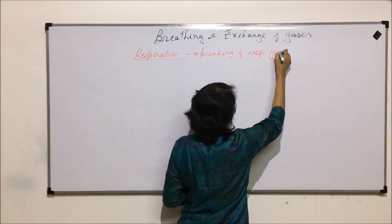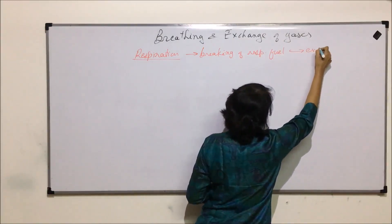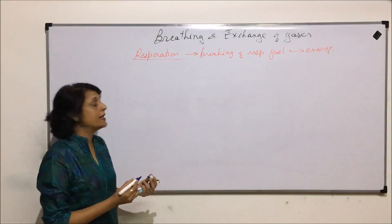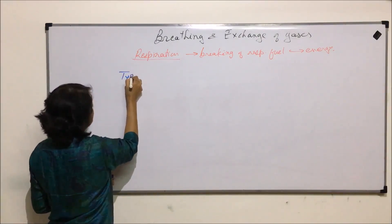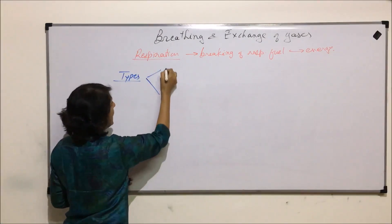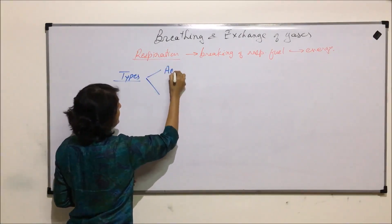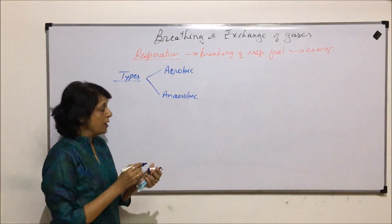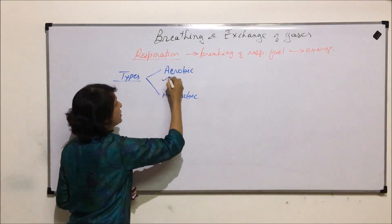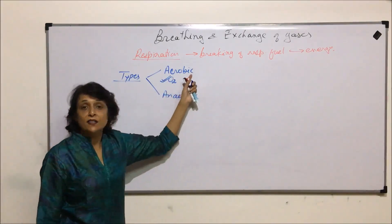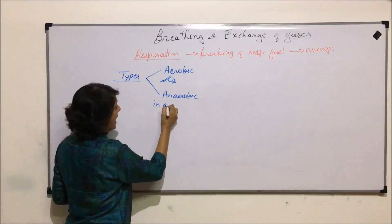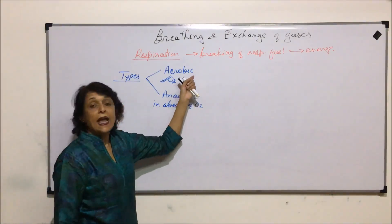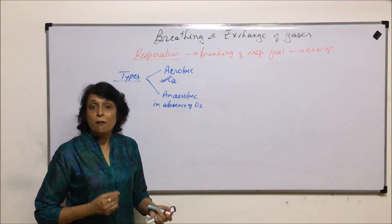Respiration is basically the breaking down of respiratory fuel to get energy. If this breakdown takes place in the presence of oxygen, we call it aerobic respiration. These become the two types of respiration: aerobic and anaerobic. Aerobic respiration requires oxygen — oxygen is essential for this pathway. Anaerobic respiration takes place in the absence of oxygen, and that is why it is called anaerobic.